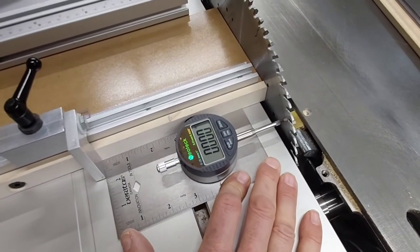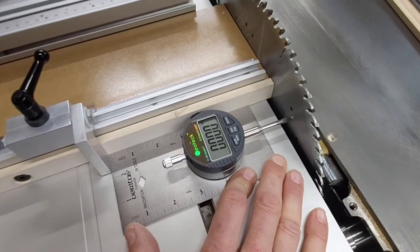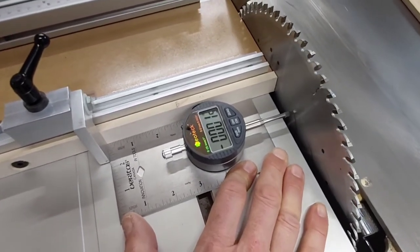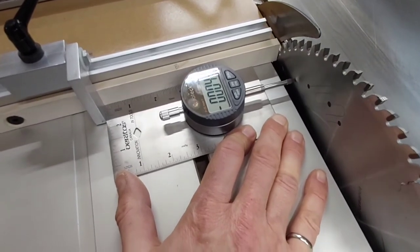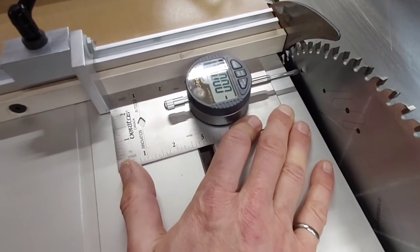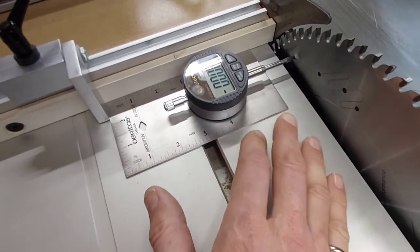So here we go. I'm going to push the carriage forward, the sliding table forward, and we're going to see what happens. We're hoping that reading's going up because that would indicate that the table is sliding away. It's showing six thousandths there.